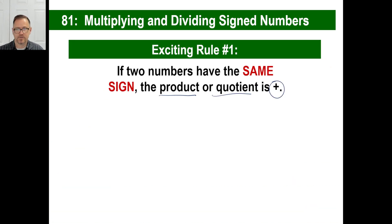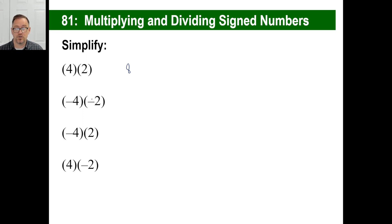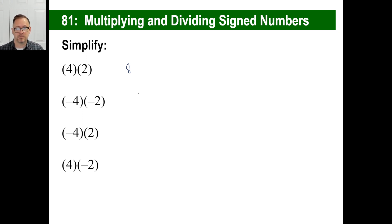Let's simplify these examples. Four times two is eight — both the same sign, so the answer is positive. Negative four times negative two: both the same sign, the answer is positive eight. Negative four times positive two — different signs — is negative eight. Four times negative two — different signs — is also negative eight.